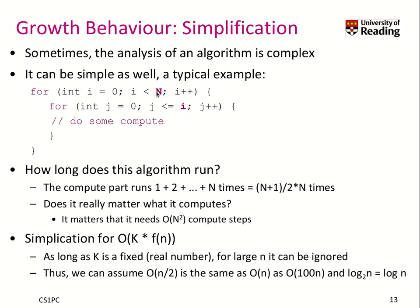The analysis of an algorithm can be very complex and tedious, which is why we are often happy to find sufficiently good upper and lower bounds to approximate runtime behavior. This leads to the simplification that whenever we have a constant multiplied with our function, we can ignore it for large n. So O(n/2) is the same as O(n), and O(100n) is the same as O(n). Similarly, log₂(n) is the same as log(n).